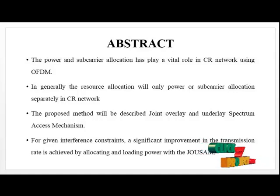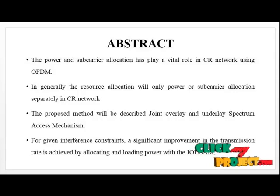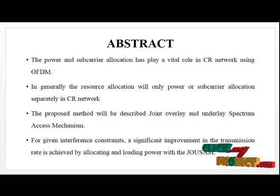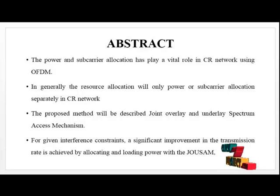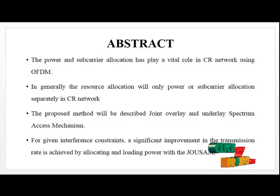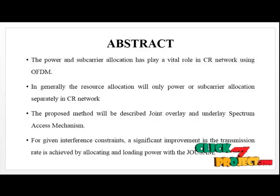Energy efficiency decreases with an increase in average power constraint, while effective capacity increases with an increase in average power constraint. The description of joint overlay and underlay spectrum access mechanism is discussed in this paper, and a low complexity suboptimal subcarrier power allocation scheme is proposed. The traditional algorithm focused on either underlay or overlay, but this algorithm combines both, called a joint system.